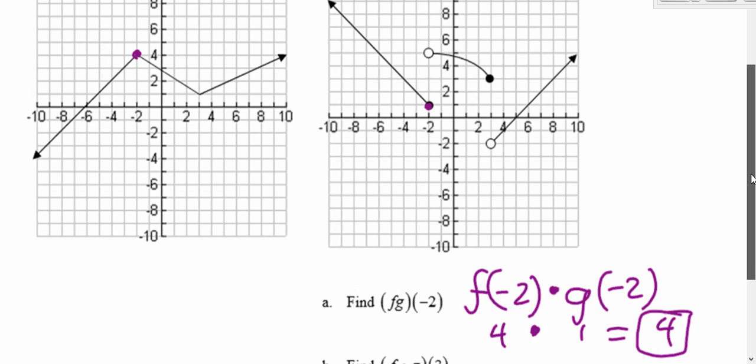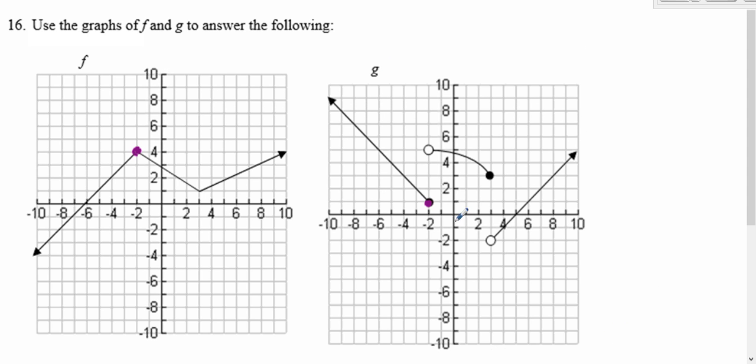Then g of 3. g of 3, find the value. The closed circle tells us the value. We get 3. Plug in 3. We get 3.